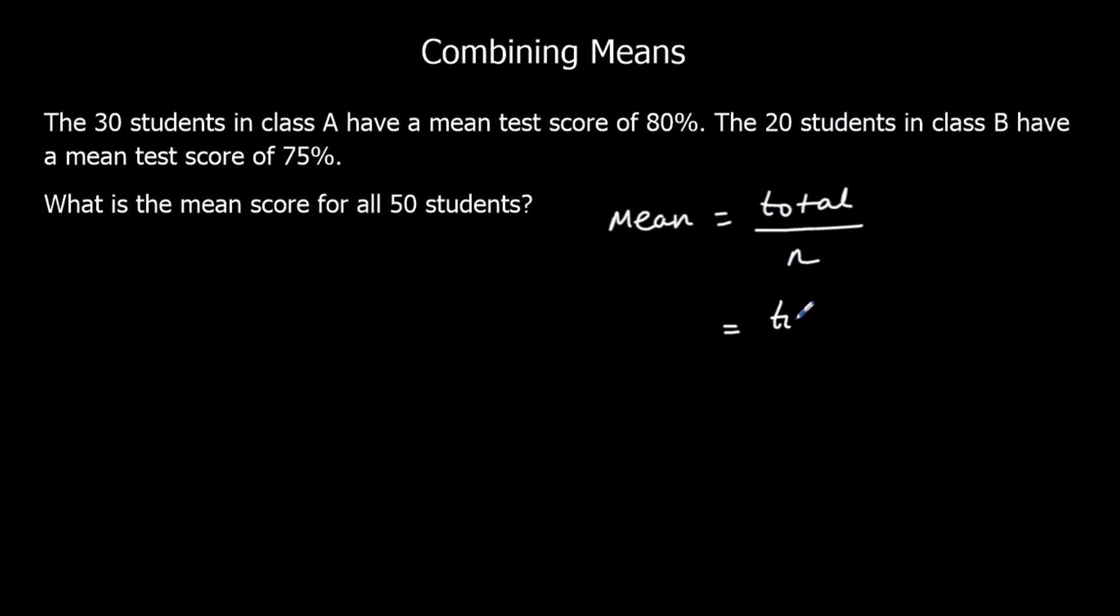So we've got total 1 plus total 2 to make the total. Two different totals added together and divide by n1 plus n2. Divide by how many in total. So we need to work out each of the totals and divide by how many bits of information there are.